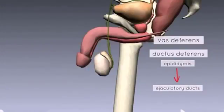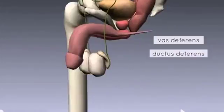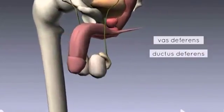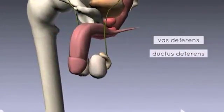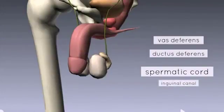The vas deferens is itself carried in the spermatic cord, and this spermatic cord travels in the inguinal canal. There is a lot to talk about with the spermatic cord, and that will be covered in a separate tutorial.